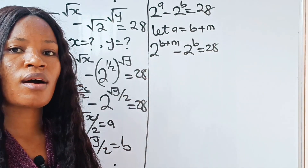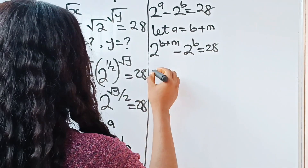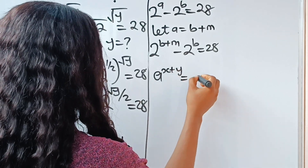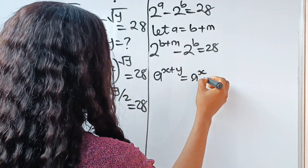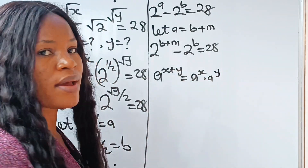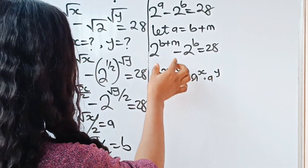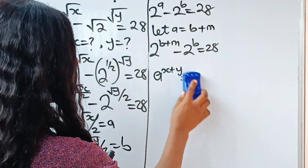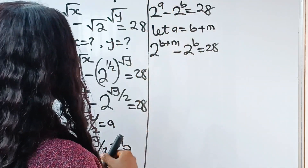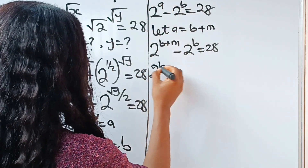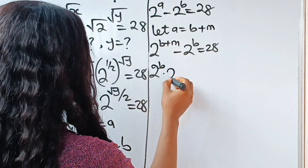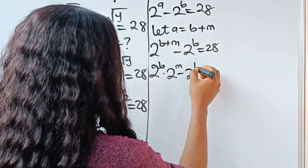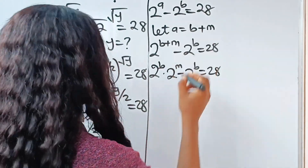According to the law of exponents, a raised to the power of x plus y is the same thing as a raised to the power of x multiplied by a raised to the power of y. So we are going to write this as 2 to the power of b multiplied by 2 to the power of m, minus 2 to the power of b, is equal to 28.